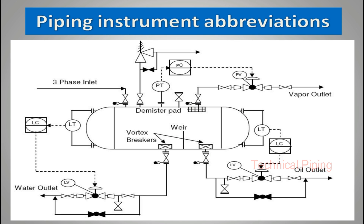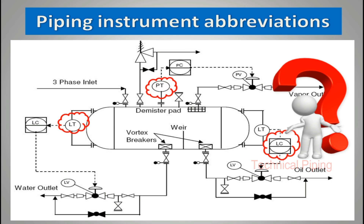Piping and Instrumentation Diagram plays a crucial role in the design and engineering of process plants and piping systems by showing the interaction of processes used to control the process. To better understand the process and instrumentation diagram, you need to decipher the symbols and abbreviations used in the Piping and Instrumentation Diagram.